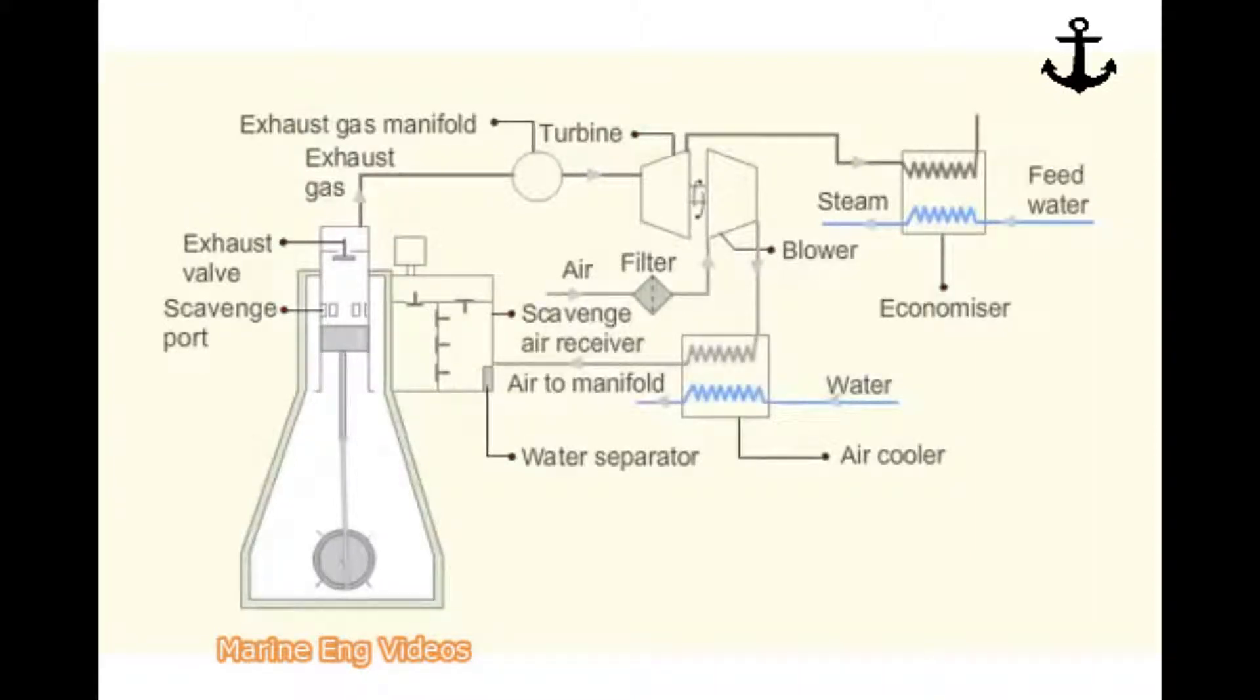The scavenge air receiver has an inner and outer compartment with a set of non-return valves between them. From the outer compartment, air enters the inner compartment. From the inner compartment, the scavenge air enters the cylinders when the piston uncovers the scavenge ports towards the end of its downward stroke.